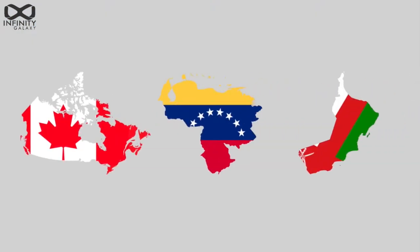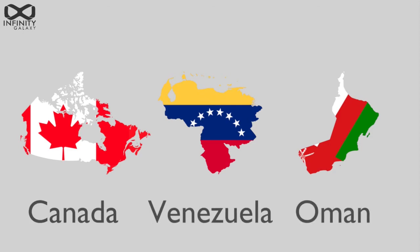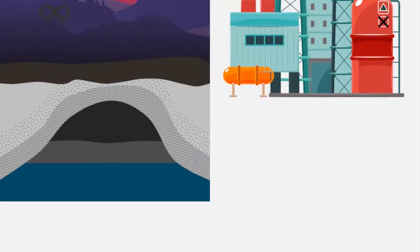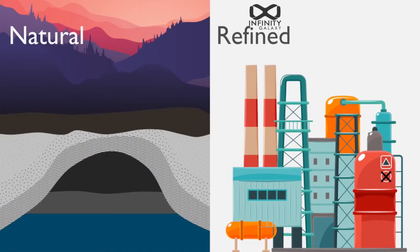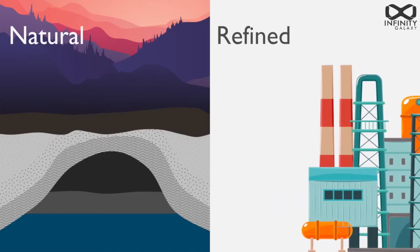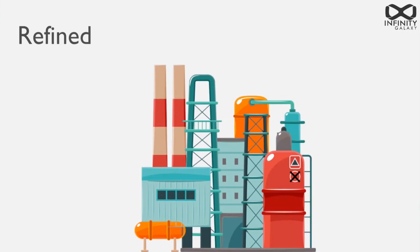Presently, most of the world's natural bitumen reservoirs can be found in Canada, Venezuela, and Oman. Although large natural reservoirs of bitumen exist in many parts of the world, most of the bitumen produced in the world is derived from crude oil.